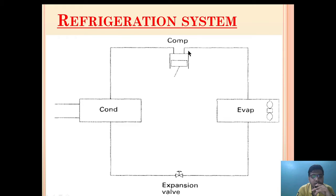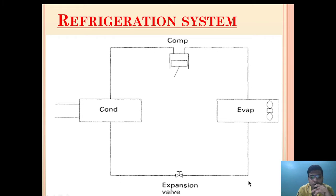As the compressor increases the pressure, the refrigerant is in vapor form at high pressure. After it has been cooled by the condenser, it is converted into liquid form, but still at high pressure. As it passes through the expansion valve — which converts the high pressure to low pressure zone — it is still in liquid form. From the expansion valve to the entry of the evaporator, low pressure liquid refrigerant enters the evaporator, extracting heat from the environment and converting into gas form, which then goes back to the compressor.